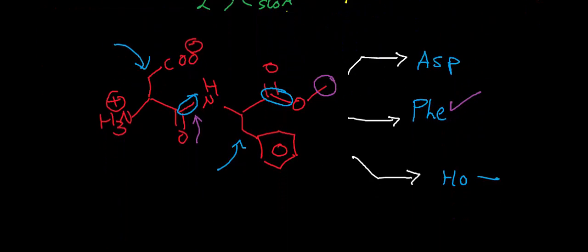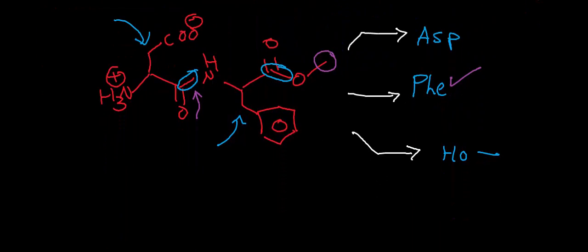We actually looked at an example with this molecule right here, aspartame. And aspartame contains phenylalanine. You can see the phenylalanine residue right here—there's at least the R group of phenylalanine, along with the alpha carbon. If you were to look at the complete hydrolysis of aspartame, you would get one aspartate residue, one phenylalanine, and a methanol, which we don't really care about.